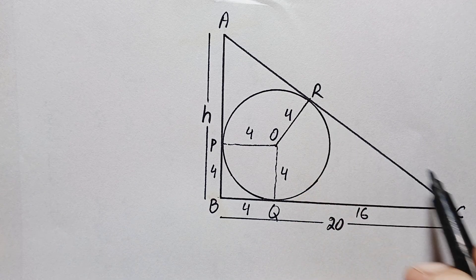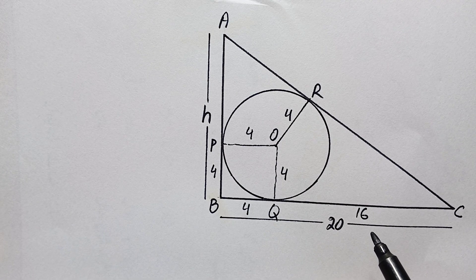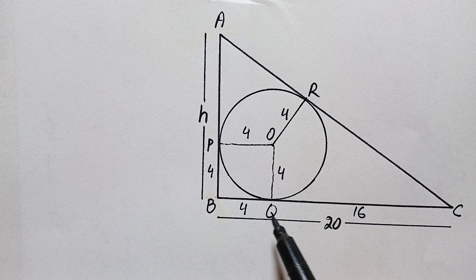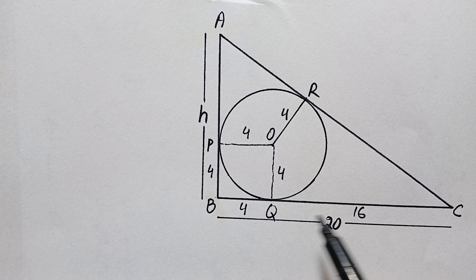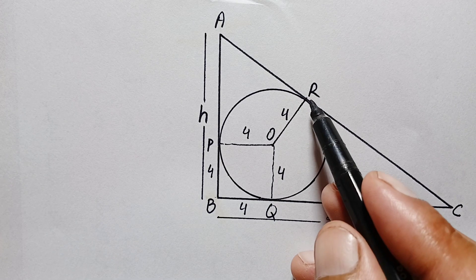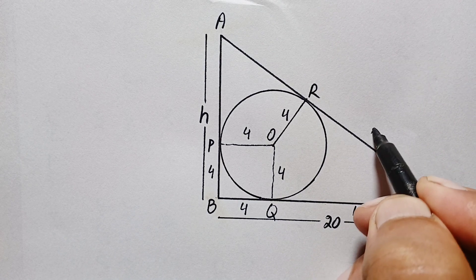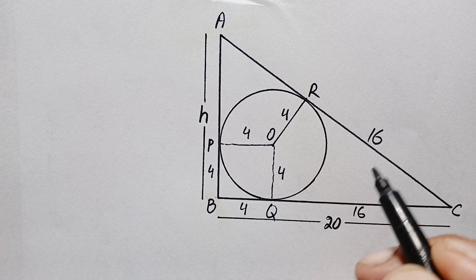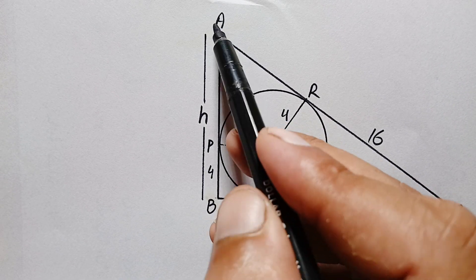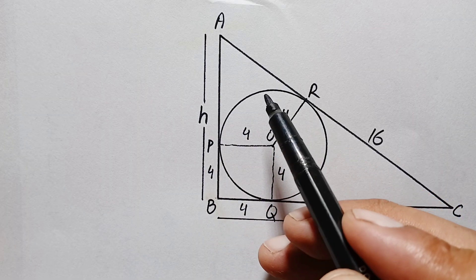Now we will use the tangent to a circle theorem: if we have two tangents from an external point to a circle, then the lengths of those two tangents will be equal. So we have two tangents from point C to this circle — tangent QC and tangent RC. Since QC is 16 units, RC will also be 16 units. We also have two tangents from point A to this circle — tangent AP and tangent AR — which will be the same in length, but the length is not given.